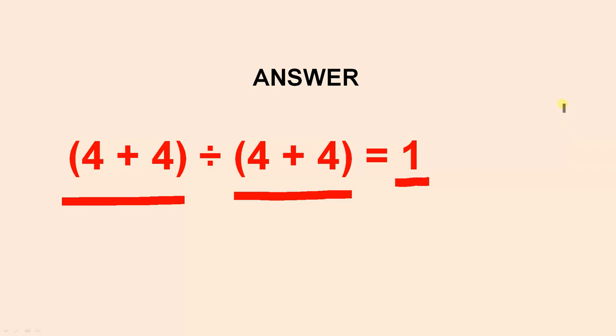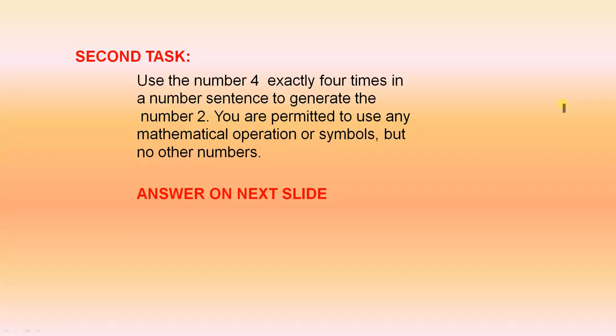Let's look at the second task. The second task says that we have to use the number 4 exactly 4 times under the same conditions to generate the number 2. Again you can pause the video here if you want to try this out for yourself.